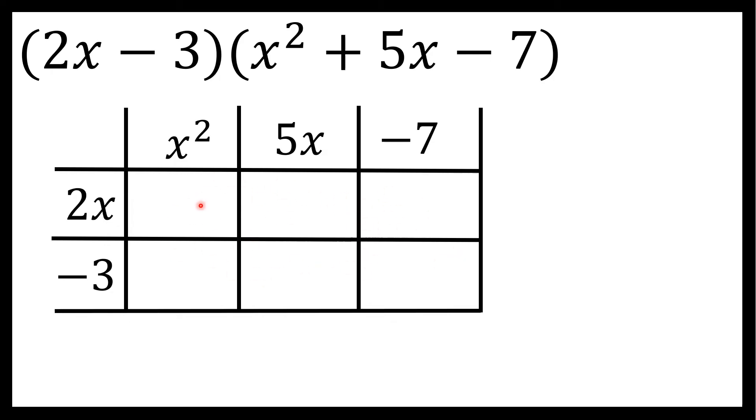Inside of this box, there are six separate boxes, and inside each box, I'm going to multiply the terms that I see to the left and above each box. So in the first box, I'll multiply 2x and x squared to get 2x to the third power. Then I'll take a look at the next box, and above that box is 5x, and to the left is 2x. 5x times 2x is 10x to the second power. And then in the final box in the first row, 2x times negative 7, positive times a negative is negative 14x.